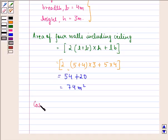Now it is given to us in the question that cost of white washing is rupees 7.50 per square meter.